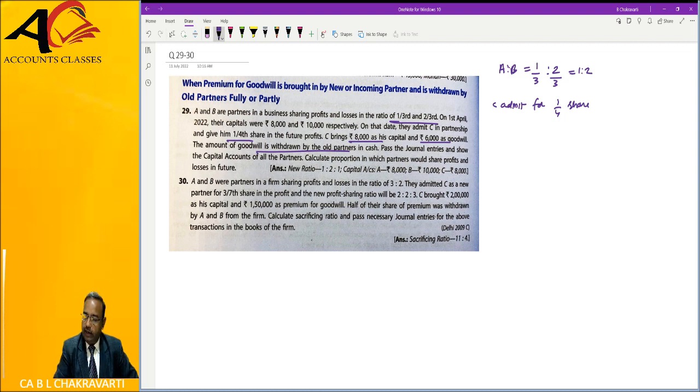Now, new ratio is asked. Calculate proportion in future. This means they have asked for new ratio. So when we are not given anything, what do we write? How much of the remaining share?